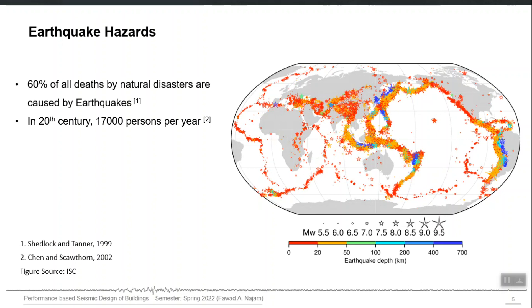On average in the 20th century we had 17,000 deaths per year caused by major earthquakes. We have the Kashmir 2005 earthquake in Pakistan where the official figure exceeded 73,000 deaths.